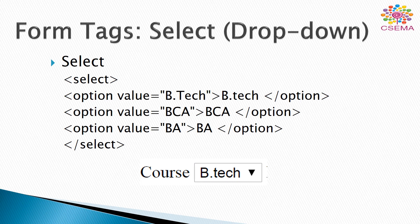Another control is the select tag. The select control is used to create a drop-down menu when we have multiple choices and need to select only one. The select tag must be closed, and inside we define option tags with value attributes — for example, btec, bca, and ba. The output shows a courses field where the first selection is btec, since it is the first option value. When clicked, we get a drop-down menu where we can select only one option depending on user input.